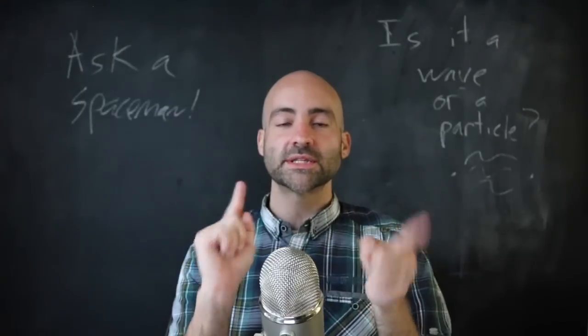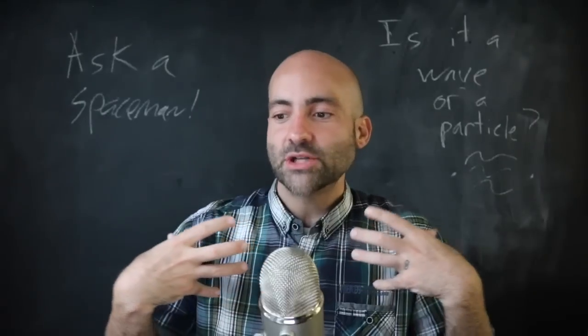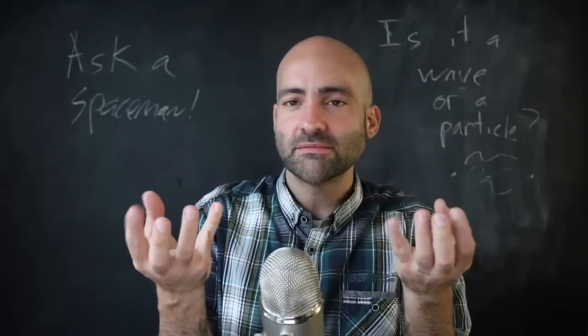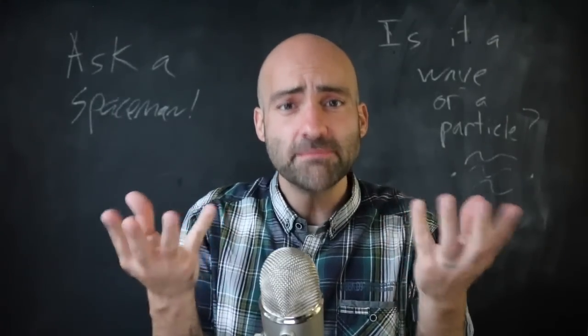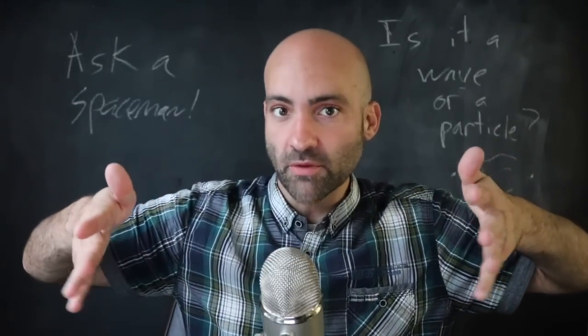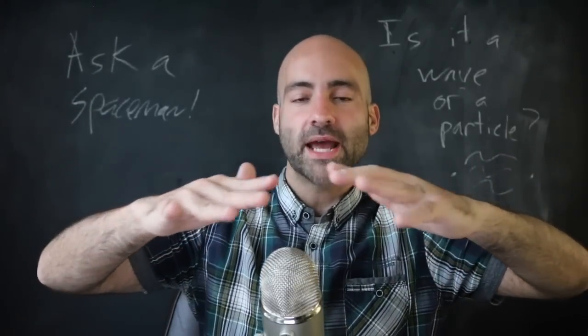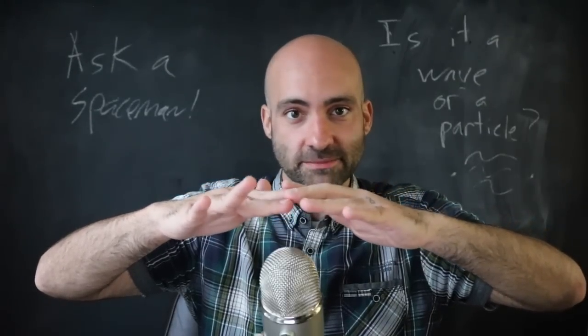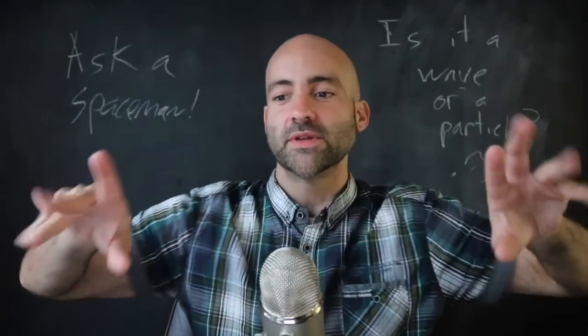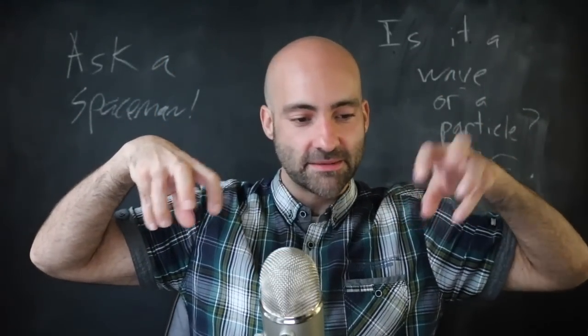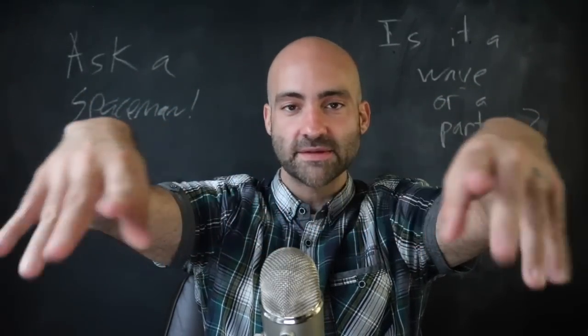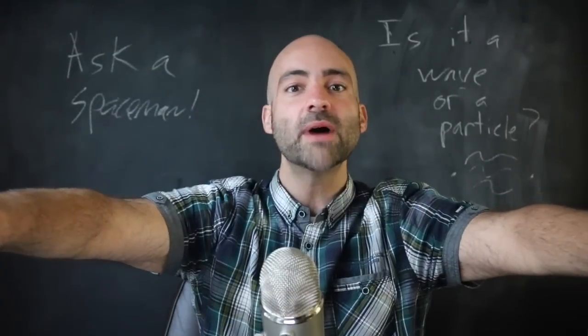So when you're shooting these electrons through the slits, as they travel, as they propagate, they're not little bullets. They're little like clouds of where they might be. And these clouds, since they're described by waves, the Schrodinger wave equation to be specific, they interact with each other just like ocean waves do, just like electromagnetic waves do. And then when these clouds, you can imagine like, okay, there might be an electron here, there might be some electron here. They go through the slits and they start interacting with each other in a very complicated way, exactly like waves would. And it kind of spreads out where you might find the electron.